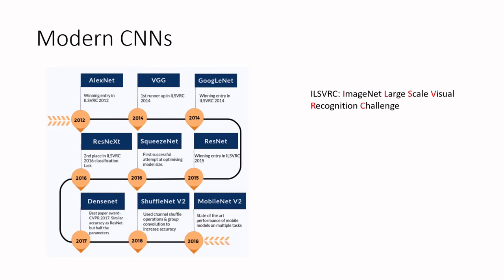Looking at popular networks: AlexNet came out in 2012 and won the ILSVRC — ImageNet Large Scale Visual Recognition Challenge — competition that year. It was followed in 2014 by VGG, and GoogleNet also won in 2014. We will cover a few of these networks in the following slides.